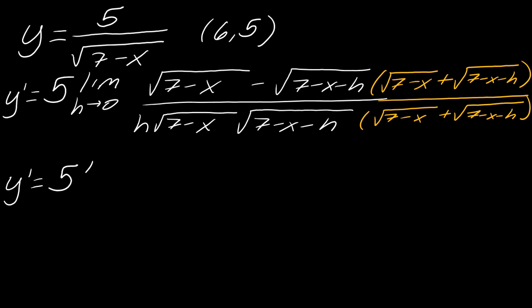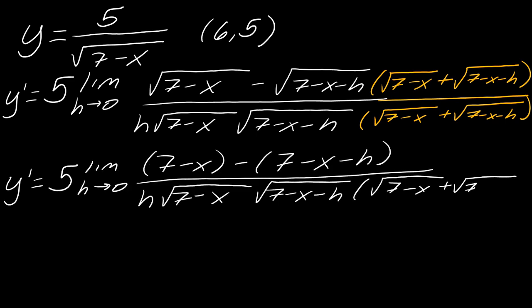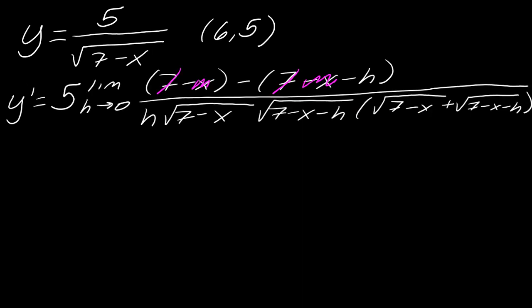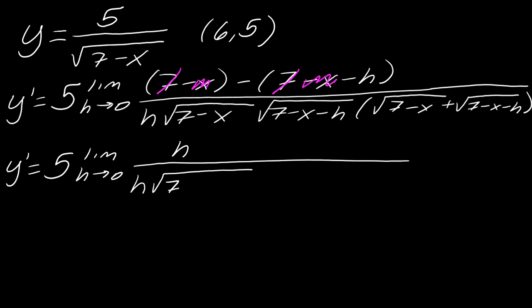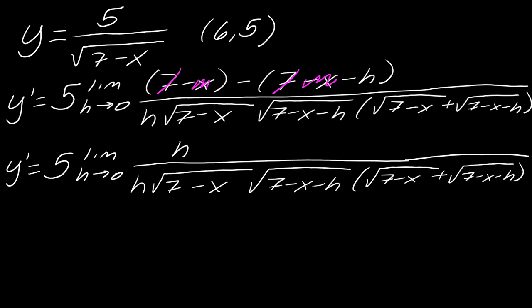So this is going to come out to — okay, so this is what this is going to come out to. Now as I look at the numerator, notice what cancels. The 7 and then a minus 7 are going to cancel out. And then I've got negative x and then negative negative x, which becomes positive x, so those have opposite signs. So I'm just left with this h. Let me clear space and write out what we're left with. Now you can see that the h's are actually going to cancel out. Let's write everything out one more time.